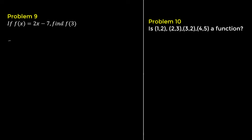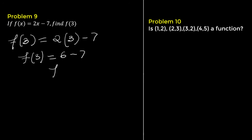Problem 9. If f of x equals 2x minus 7, find f of 3. Substitute 3 for x: 2 times 3 minus 7 equals negative 1. So f of 3 is negative 1.